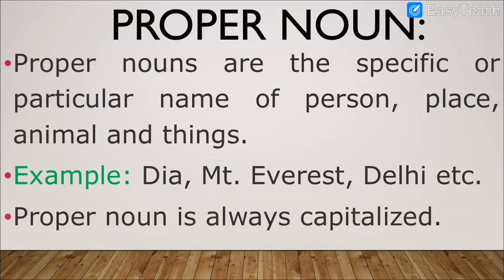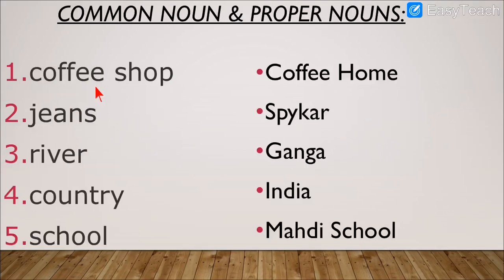After that, we had seen what are proper nouns. Proper nouns are the specific or particular name of a person, place, animal, or thing — the particular name. Any one person or any one place. There is no other person or place like that. Like the example Diyah — Diyah is the name of one girl only. Then Mount Everest — it is the name of only one mountain. Delhi — it is only one city. Proper noun is always capitalized. Examples: common nouns — coffee shop, jeans, river, country, school. Proper nouns — Ganga, India, Mohadi school — all capital letters.